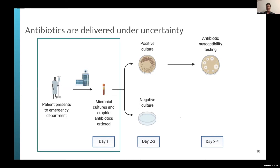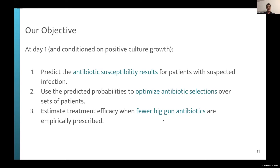The goal of this project is to develop a decision support system that intervenes at day one when clinicians are under this state of uncertainty and need to prescribe appropriate empiric treatments. Our objective: conditioned on positive culture growth, we use electronic medical record data to predict antibiotic susceptibility results, use those predictive probabilities to optimize antibiotic selection over sets of patients, and estimate treatment efficacy when the optimizer is restricted from using certain broad-spectrum last-line antibiotics.